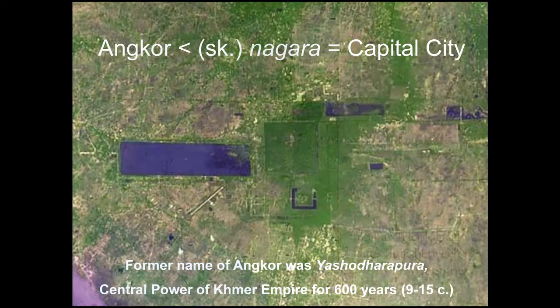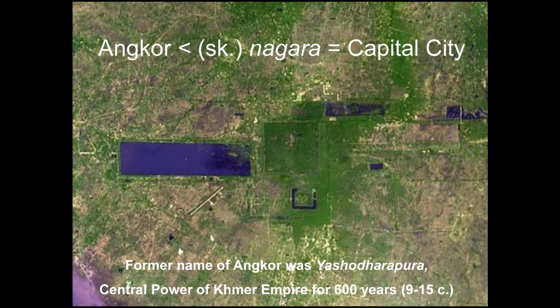I would like to explain about Angkor — what is Angkor? Angkor is derived from the Sanskrit Nagara, which means the capital city. The former name of Angkor was Yasodharapura. Angkor was the central power of the Khmer Empire for 600 years from the 9th to the 15th century.